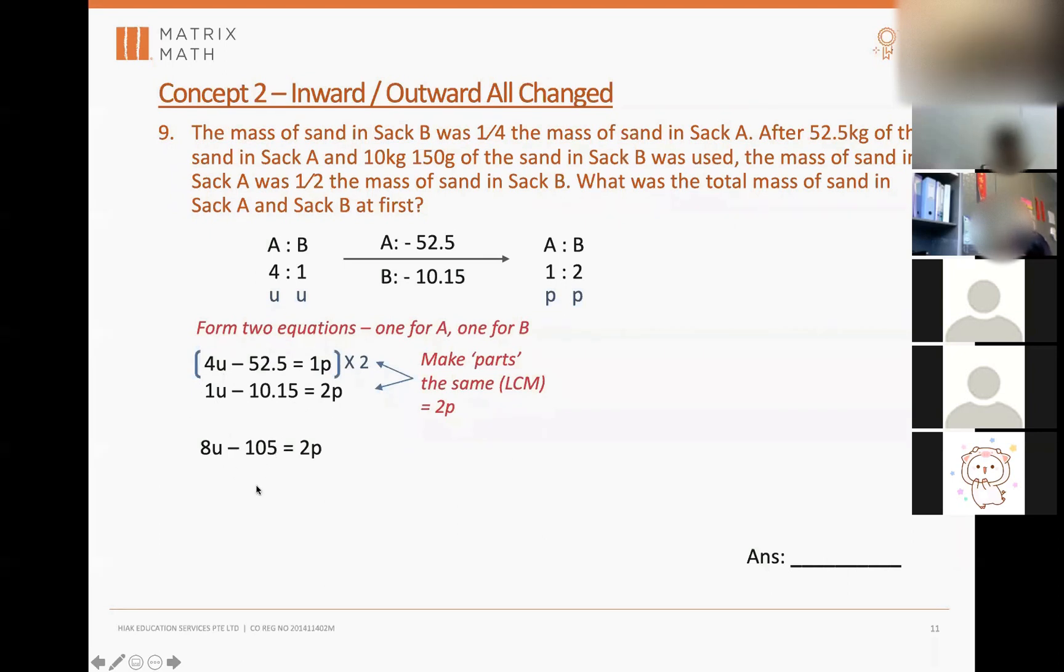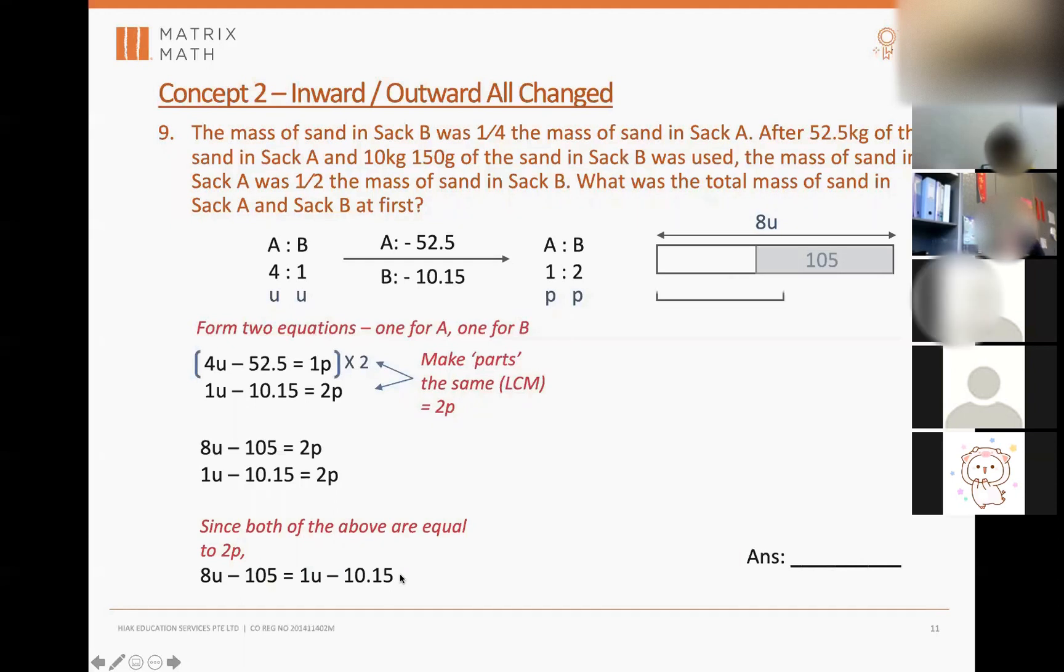I can make them into one single statement. 8u minus 105 equals 1u minus 10.15. Both are equal to two parts so they are equal. Now with this I can form a model to solve for one unit. Eight units, I take away 105, and this will be equal to one unit take away 10.15. Natasha, understand?